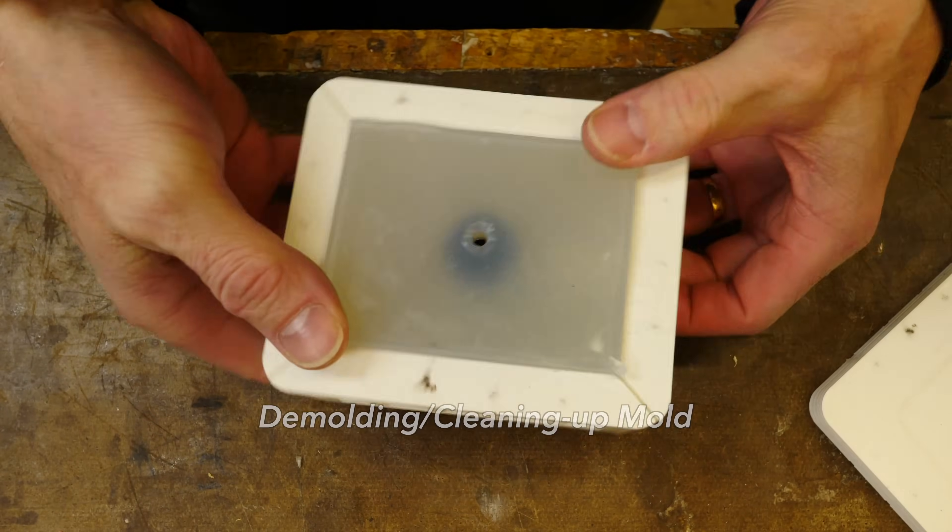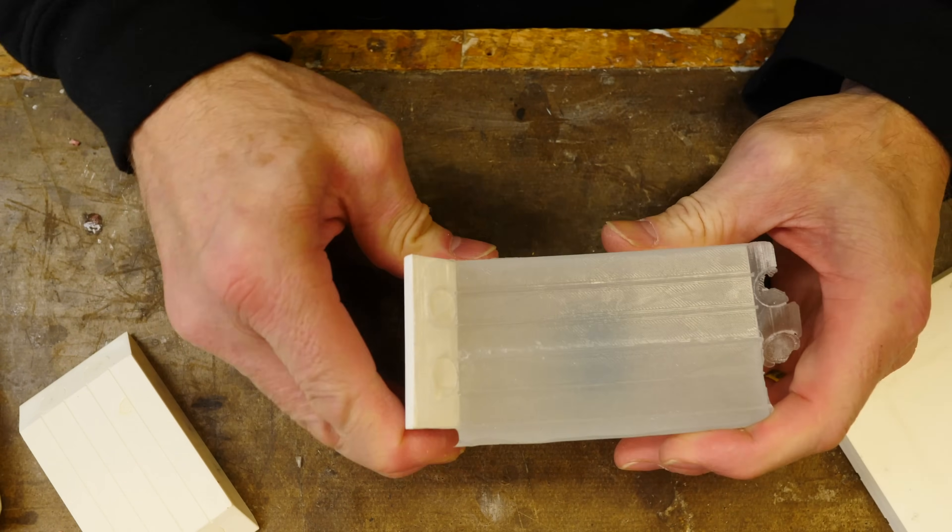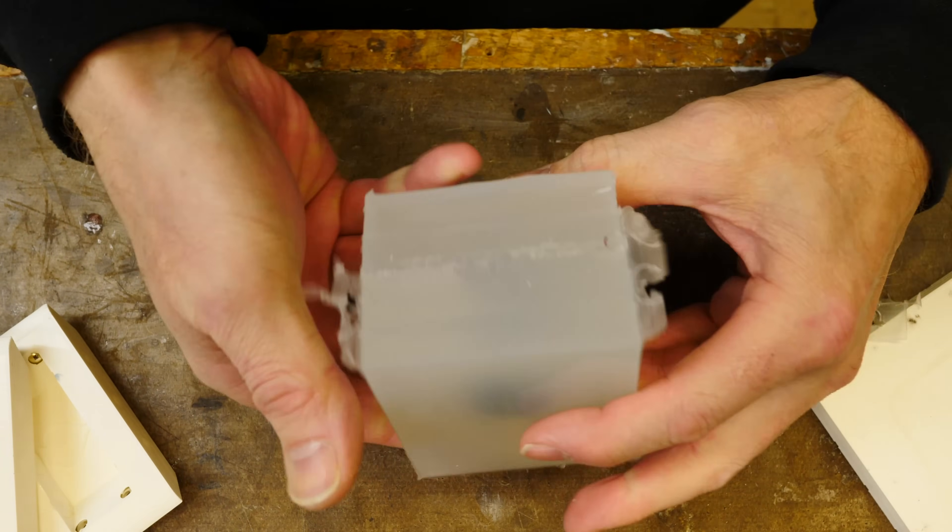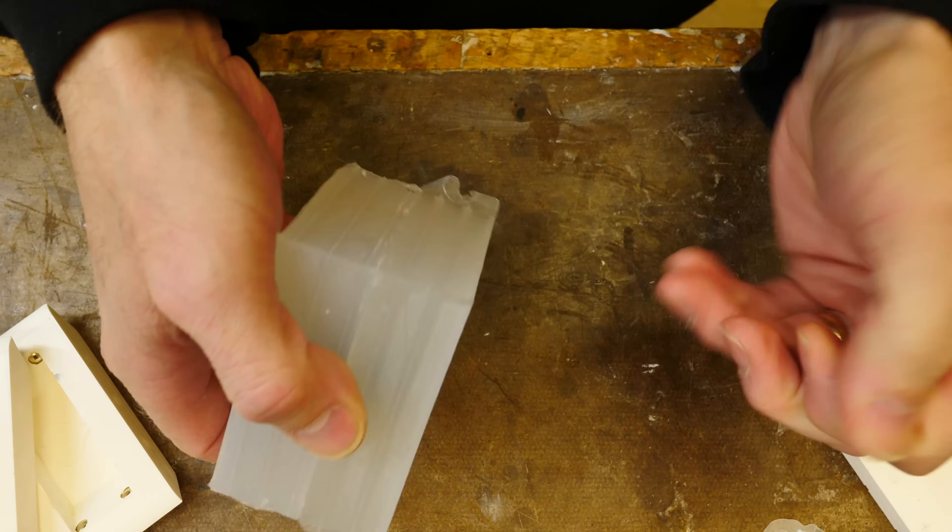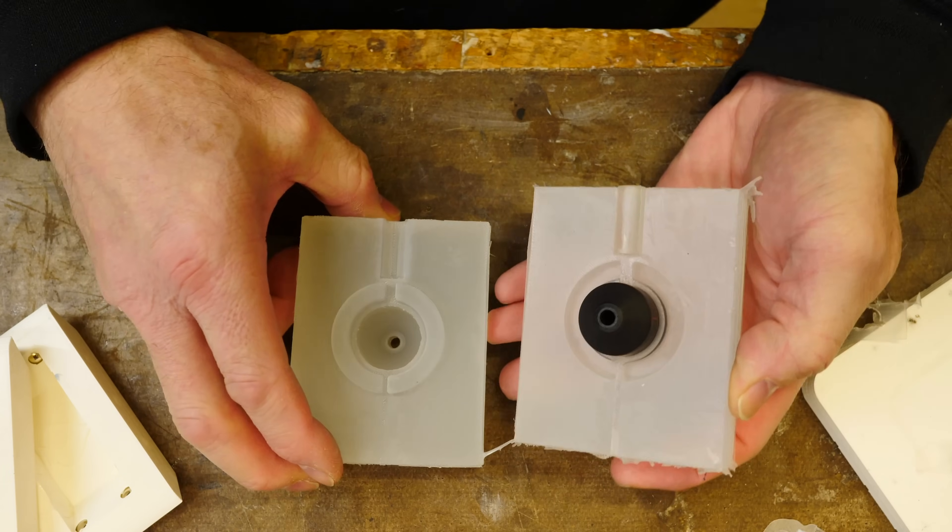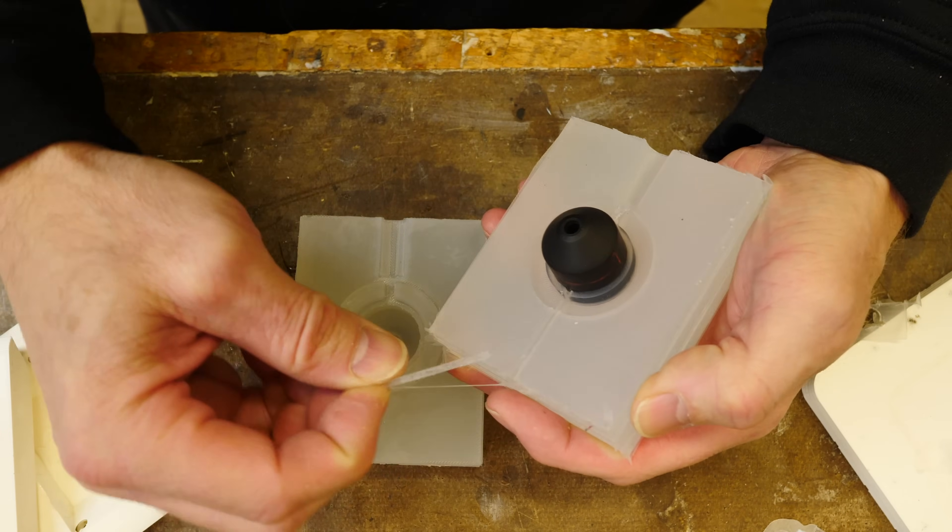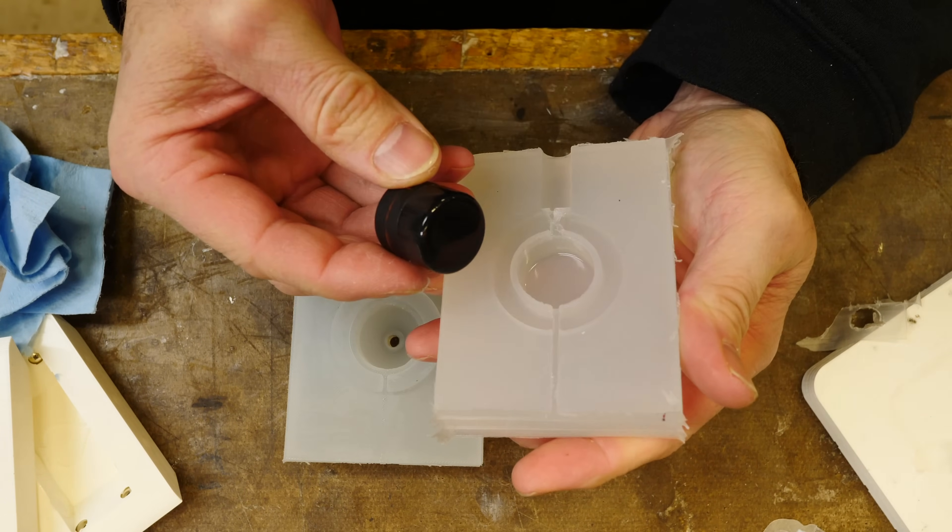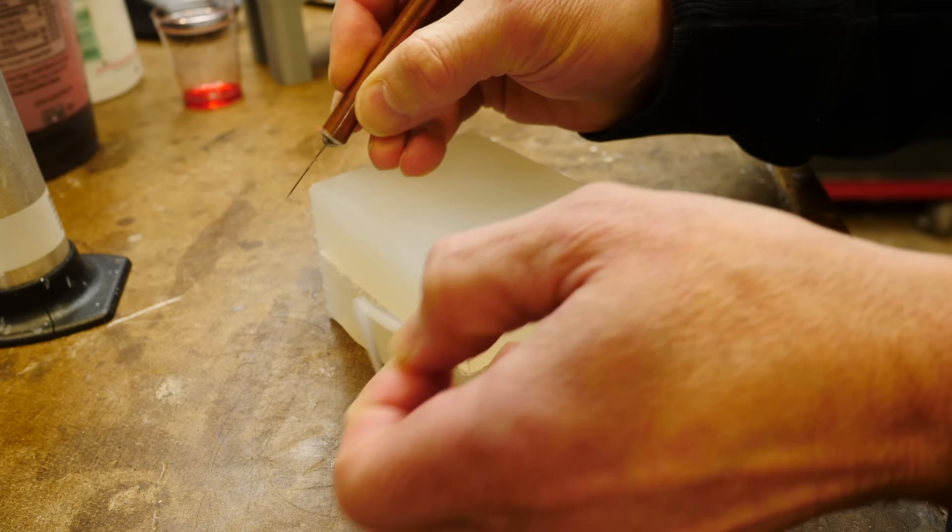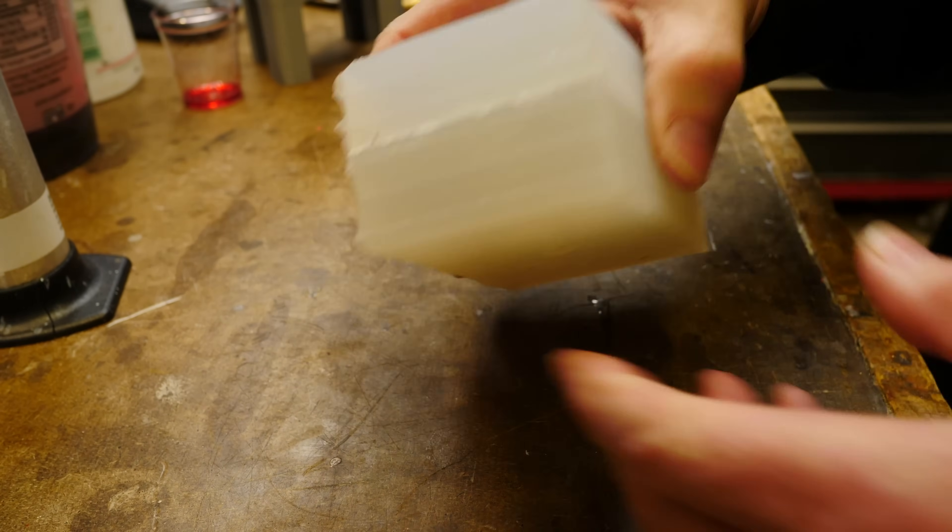All right, the silicone is cured overnight. Let's demold, remove the sides of the mold box. We'll do a little bit of cleanup. We'll separate the two silicone halves. They should come right apart. There is our mold, and we'll remove the sprue and the vent, and now we can remove the part from the mold. I'm going to cut off the edges just to clean up the mold so everything is nice and flat.